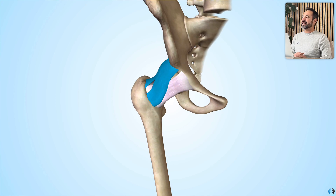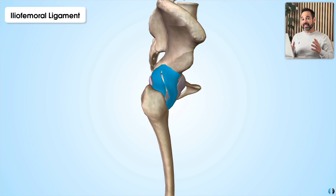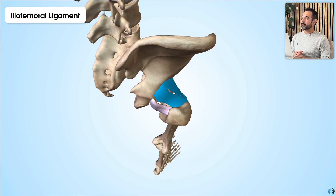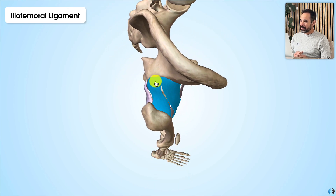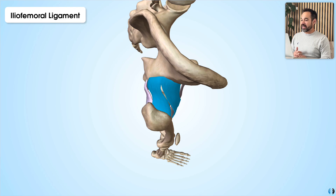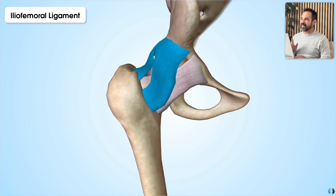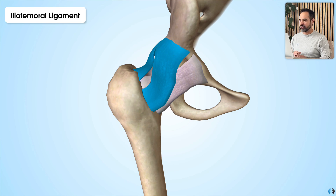The iliofemoral ligament is the biggest of the three and is suggested to be one of the strongest ligaments in the human body. It presents as a Y shape — looking at it from a bird's eye view, we can see the bottom of the Y before two branches going to the medial and lateral sides. The two individual strands run towards the intertrochanteric line of the femur.